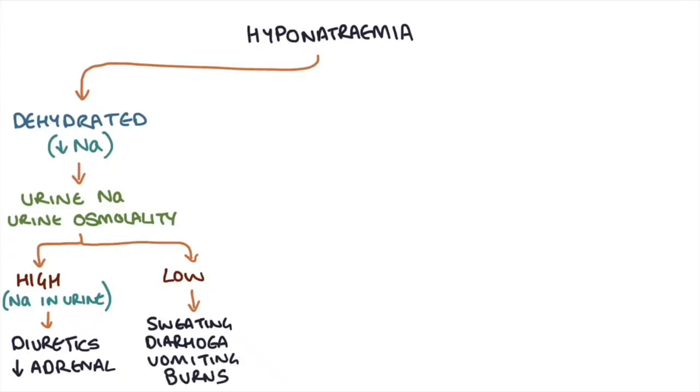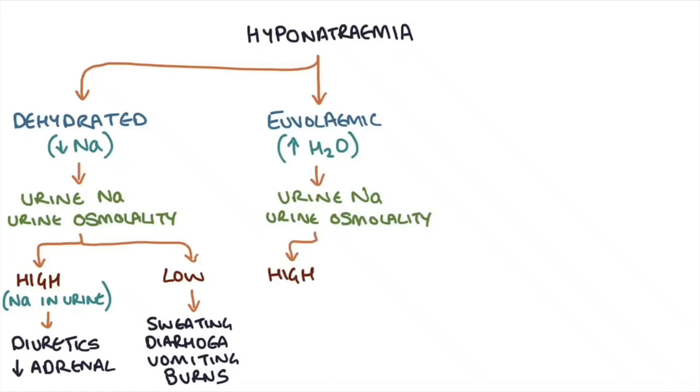Now let's say you assess them and they're euvolemic. As a result, you know that there is a dilutional hyponatremia, meaning excessive water has been gained. You check the urine sodium and the urine osmolality. If this is high, you know that the urine is being concentrated by excessive reabsorption of water in the kidneys. Therefore, the patient has syndrome of inappropriate ADH, or SIADH.